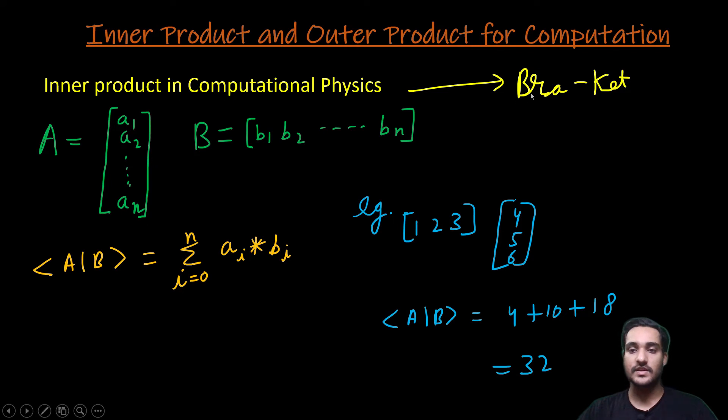It is also called as bracket product in this computation because as you can see it is created by a bra first and then a ket later, as we talked in our earlier videos. So it is called as a bracket product also.